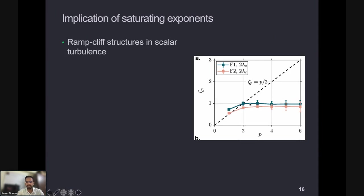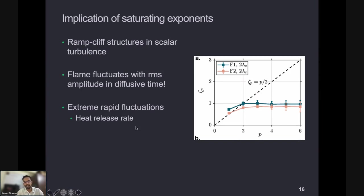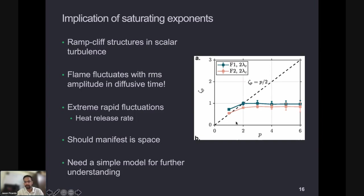What does this saturation mean physically? In the passive scalar case, saturation is due to ramp-cliff structures — perturbations of the order of the RMS amplitude happening at diffusive scales. If you take those diffusive scales to smaller and smaller length scales by increasing the Reynolds and Péclet numbers, you would have RMS-amplitude jumps happening in shorter and shorter distances. In our case, since we are doing things in time, the flame at small scales is undergoing very rapid fluctuations — it advances or recedes by an amplitude of the root-mean-square fluctuation, but in the diffusive timescale. If we could take those timescales to be smaller and smaller, we would have increasingly rapid extreme events. This has implications for operation and heat release rates, and it would also manifest in space as ramp-cliff structures on the flame surface, though we can't see this experimentally due to our limited range of spatial scales.